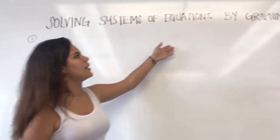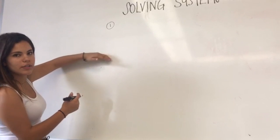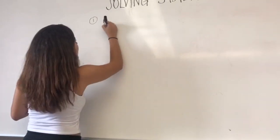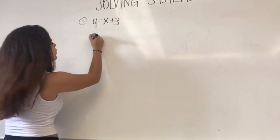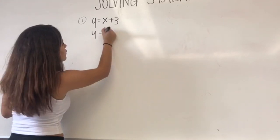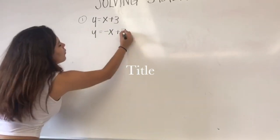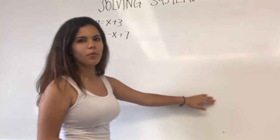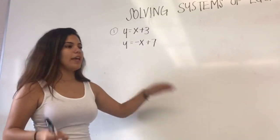If we are solving systems of equations by graphing, you will have two equations. The first one we have here is y equals x plus 3, and the second one is y equals negative x plus 7. What we want to achieve by doing this is to find the point where the two equations meet, or if they don't meet at all, or if they are always meeting.